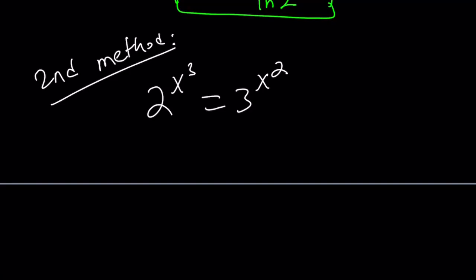So we can basically write 2 to the x cubed as 2 to the power x to the power x squared, and the second one is just 3 to the power x squared. So I kind of put the 3 in parentheses to emphasize the fact that both have the x squared.